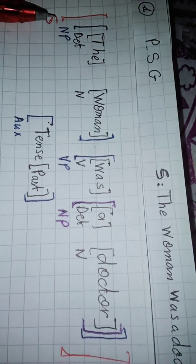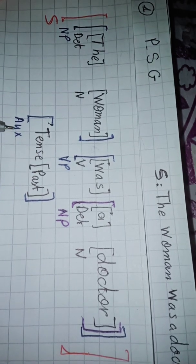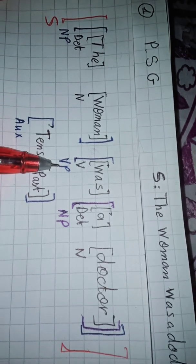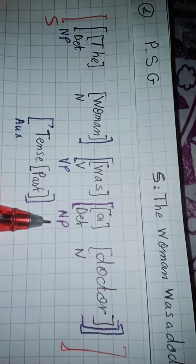Our sentence consists of a noun phrase and a verb phrase and of course an aux. This verb phrase consists of another noun phrase, a verb and a noun phrase.